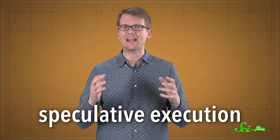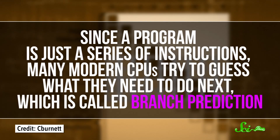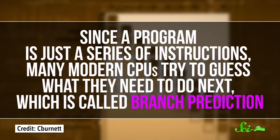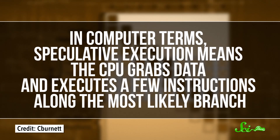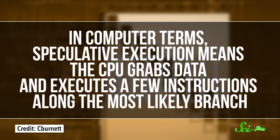One of these tricks is called speculative execution. Since a program is just a series of instructions, many modern CPUs try to guess what they need to do next, which is called branch prediction. Speculative execution means the CPU grabs data and executes a few instructions along the most likely branch. This would be like guessing that your partner will probably want coffee in the morning, so you make an extra cup along with yours. If the prediction's wrong, that branch gets thrown out and the instruction-following process continues down another branch — like if your partner decides to go caffeine-free, you dump the extra coffee and pour orange juice instead. But if you're right, they get out of the door faster, and if your CPU's prediction is right, that's a head start to the next instruction.